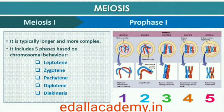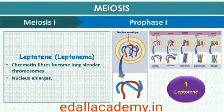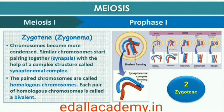Prophase of the first meiotic division is typically longer and more complex when compared to prophase of mitosis. It has been further subdivided into five phases based on chromosomal behavior: leptotene, zygotene, pachytene, diplotene, and diakinesis. During leptotene, the chromosomes become gradually visible under the light microscope, and the compaction of chromosomes continues throughout this stage. This is followed by zygotene, during which chromosomes start pairing together — this process of association is called synapsis. Such paired chromosomes are called homologous chromosomes. Chromosome synapsis is accompanied by the formation of a complex structure called the synaptonemal complex.